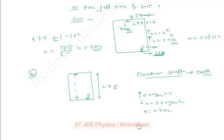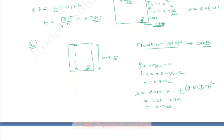So displacement will be 2.4 times t minus half g t squared, where t is 0.7 squared. So if we solve it, solving this we get around 0.7 meters.